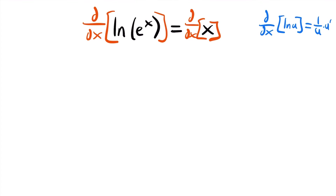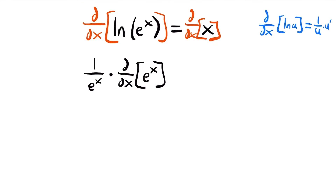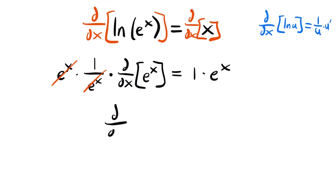Using that rule, we get 1 divided by e to the x, multiplied by the derivative of e to the x (which we write as d/dx of e to the x). This equals the derivative of x, which is just 1. Now, to solve for d/dx of e to the x, we multiply both sides by e to the power of x. Those terms cancel, and we're left with d/dx of e to the x equals e to the x.